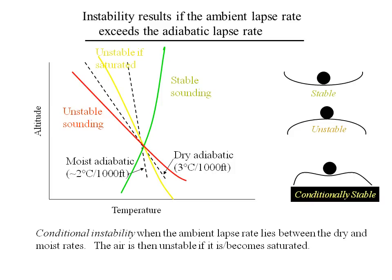To remind you from earlier, we were concerned about whether the atmosphere was stable, unstable, or in between — what's called conditionally unstable. This is determined by the ambient lapse rate, the rate at which temperature decreases with altitude, compared to the adiabatic lapse rate, which is the rate at which a parcel would cool if it was lifted.